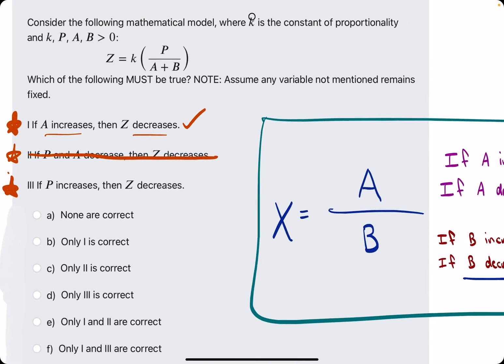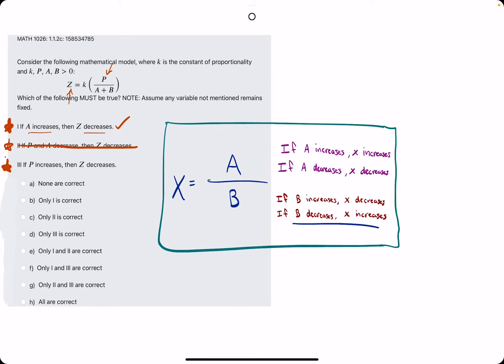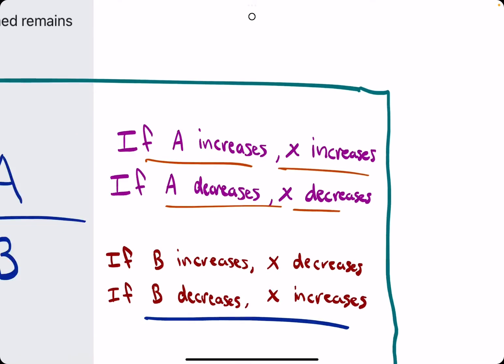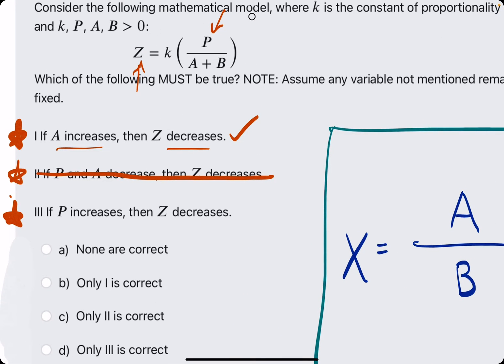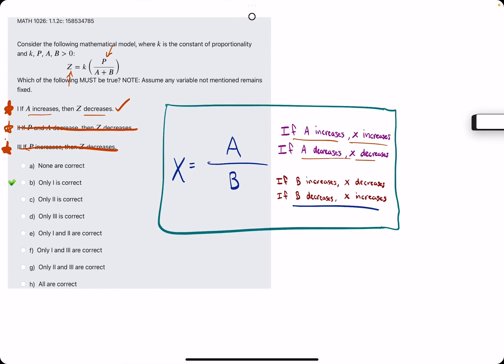Number three: if P increases, then Z decreases. Well, that's false because P is in the numerator. The numerator should be doing the same thing as the overall value is doing. So if the numerator is increasing, then Z should actually also be increasing. So this is also false.